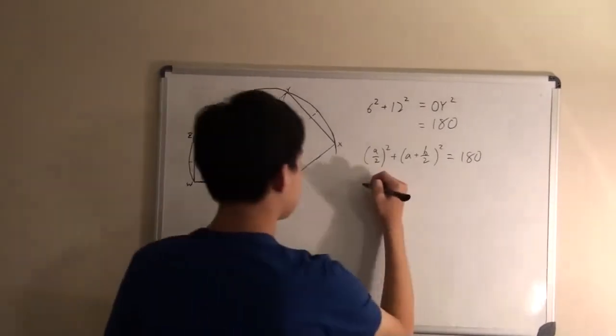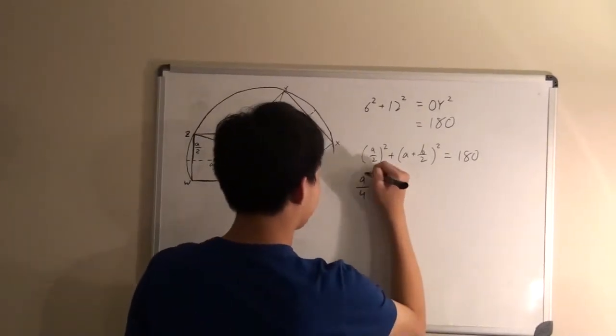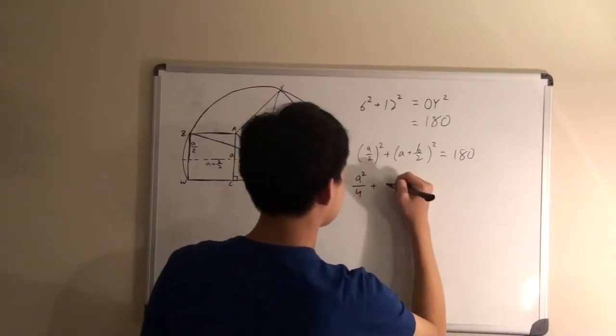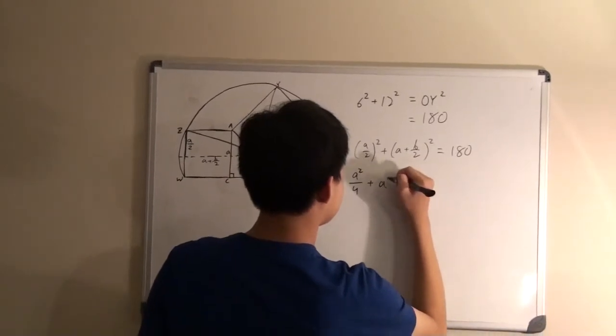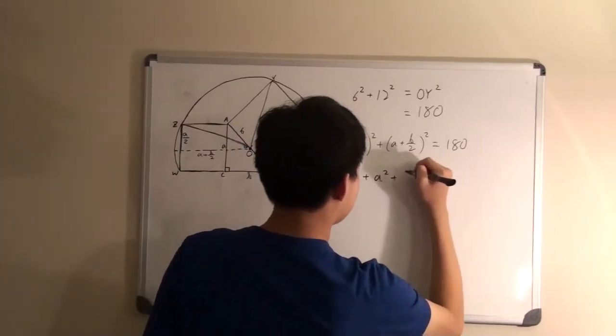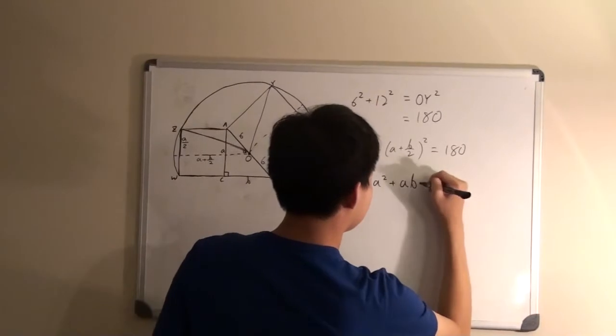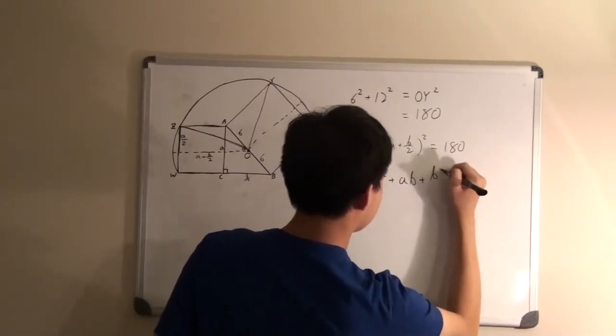And now if we expand this, we get A squared over 4 plus A squared plus AB plus B squared over 4.